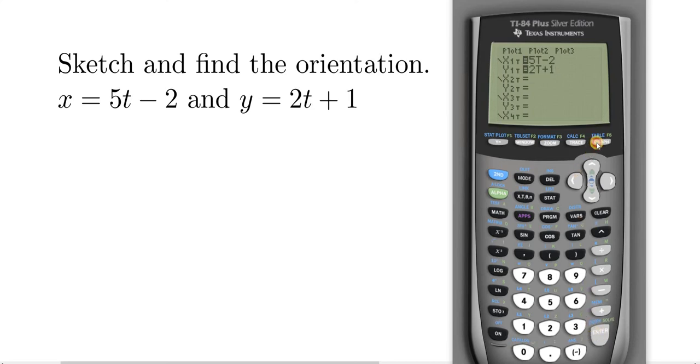So then just hit graph, and it should give us the graph, there it is, that was really quick. So how do you find the orientation? Well, you might have already noticed it's going up and to the right by the way it was traced, but there's a cheap hack that I came up with that will give you the orientation.